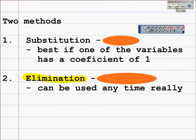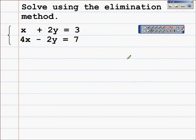Today we're going to concentrate on the idea of elimination. You can use elimination pretty much any time. It's best if we have situations like this: here we have two equations, x plus 2y equals 3 and 4x minus 2y equals 7. You could choose to use substitution here because the x term does have a coefficient of one.